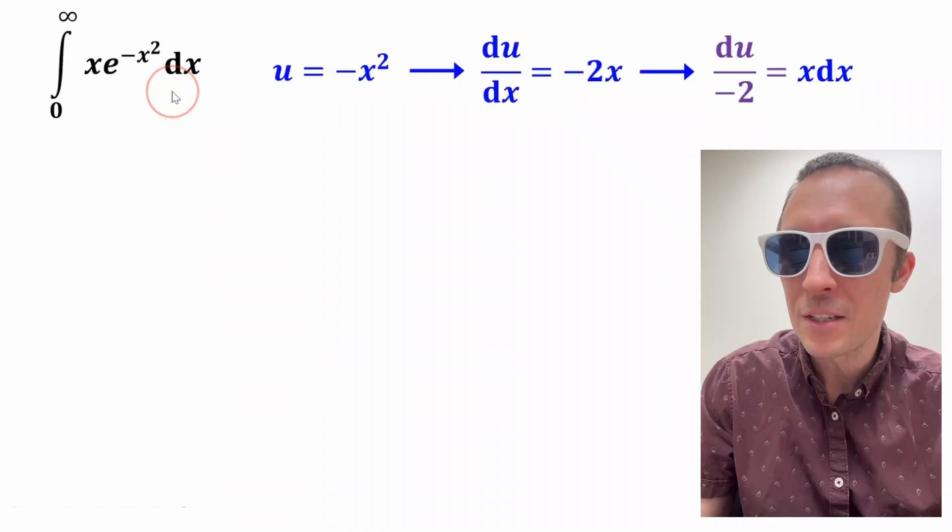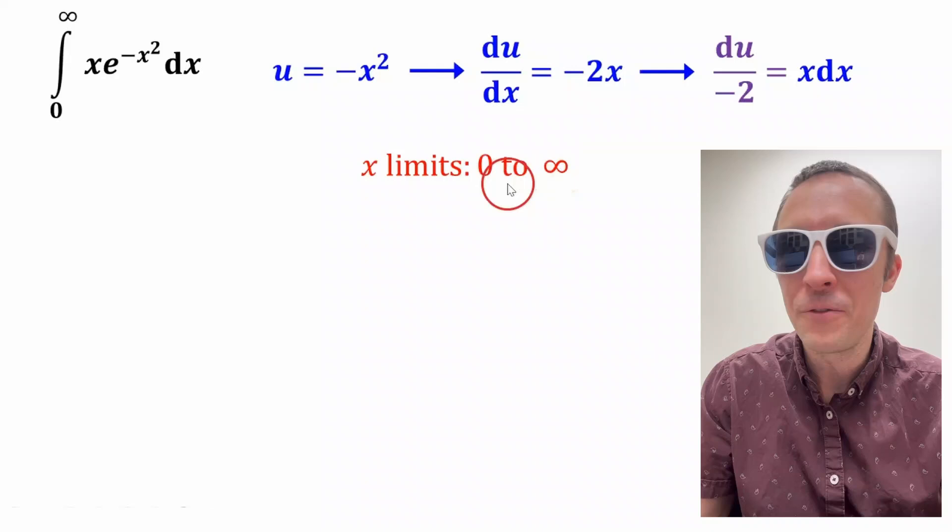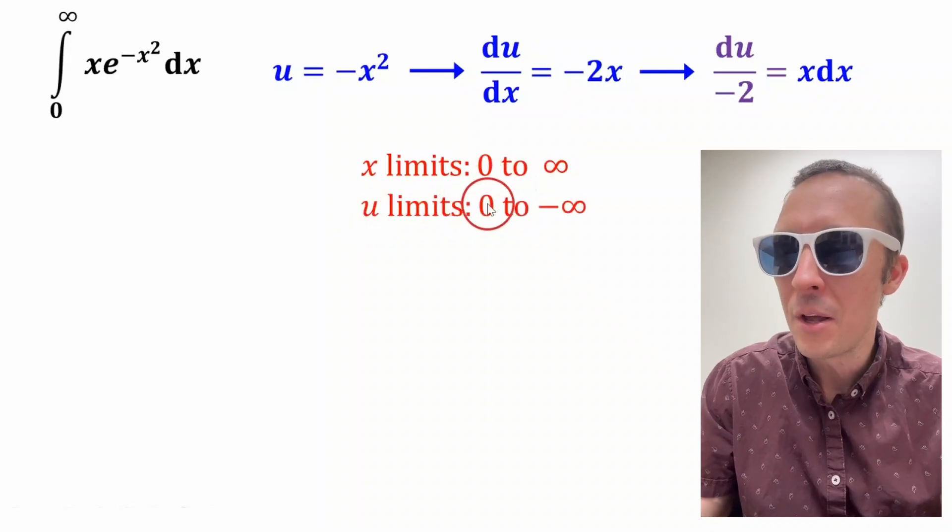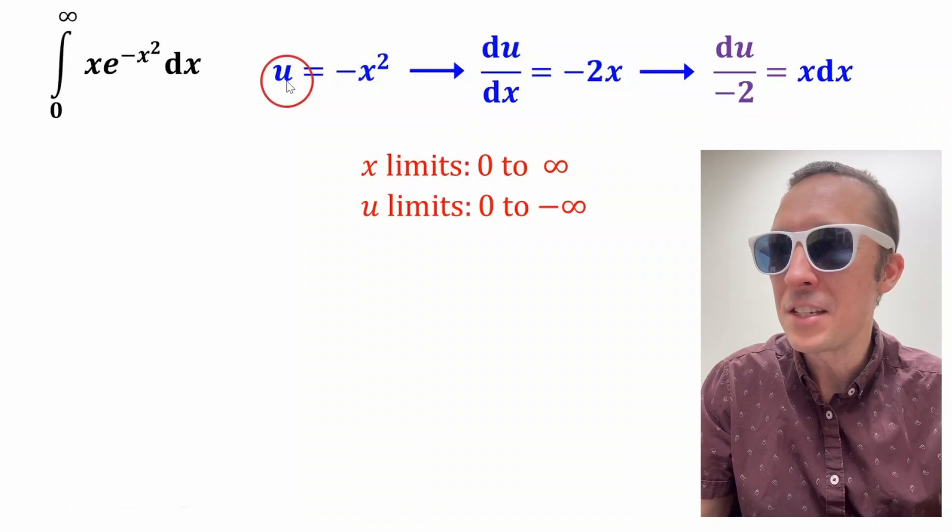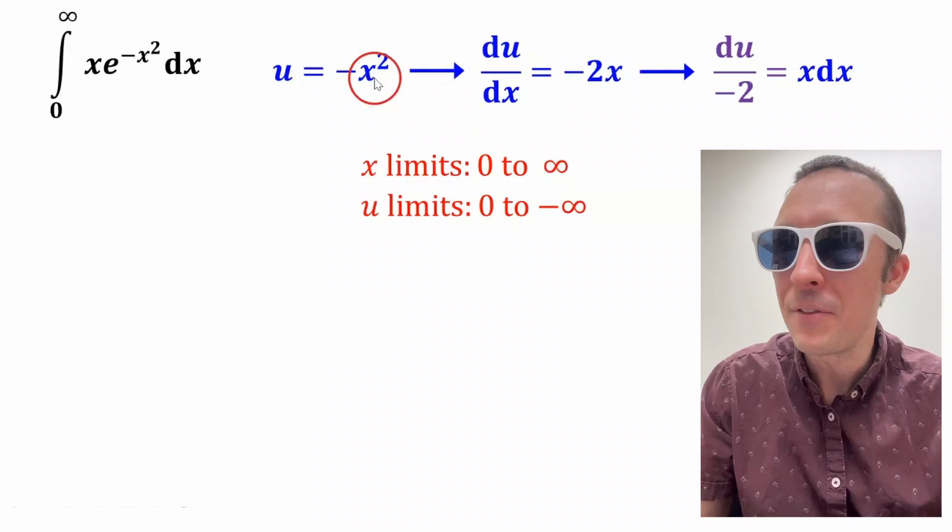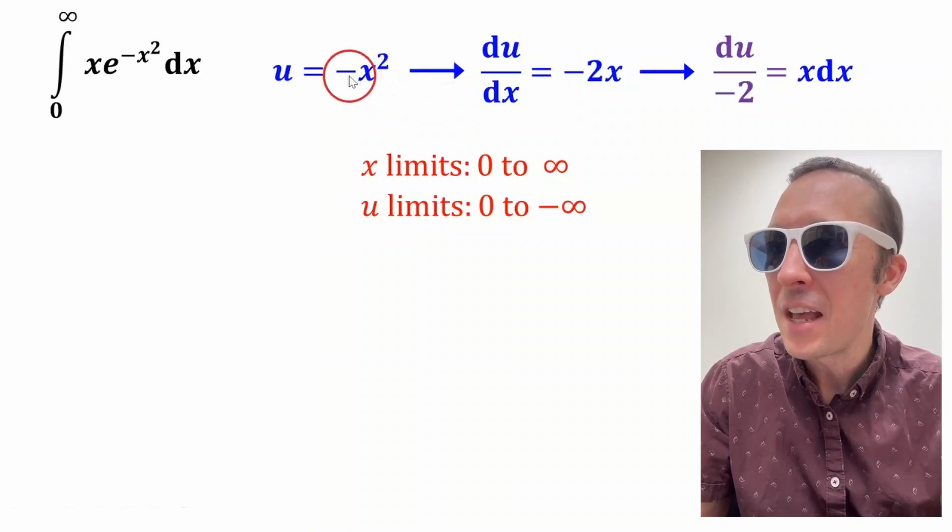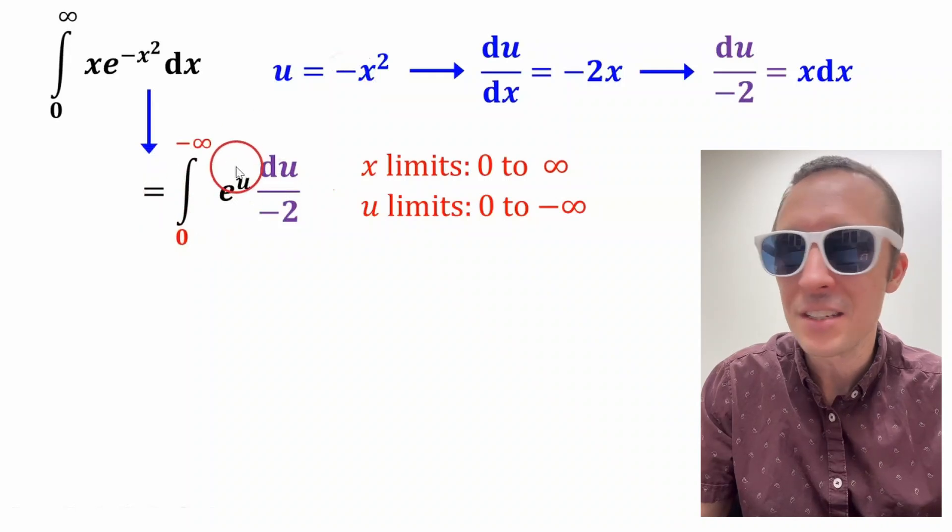Now what about the limits for our u substitution? Well, the limits of x go from zero to infinity. That's our limits of integration. So u is going to go from zero, because when x is zero, u is zero, to negative infinity. It's negative infinity because as x goes to infinity, u goes to negative infinity because of this negative right here.